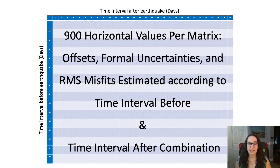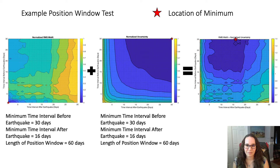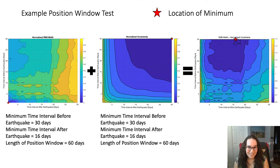We calculate RMS misfits in the time interval between 1 and 30 days before the earthquake and 1 and 30 days after the earthquake. We normalize RMS misfit and formal uncertainty before summing them to find the minimum position window time interval combination in days before and after an earthquake with the lowest value.